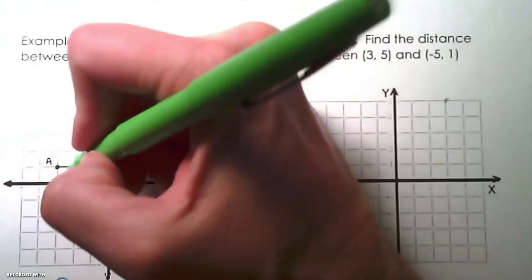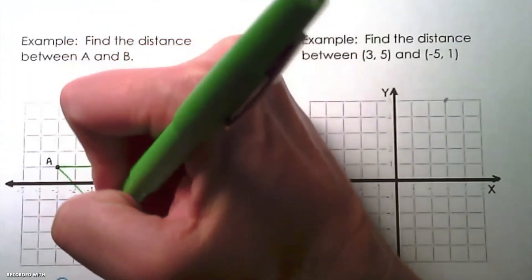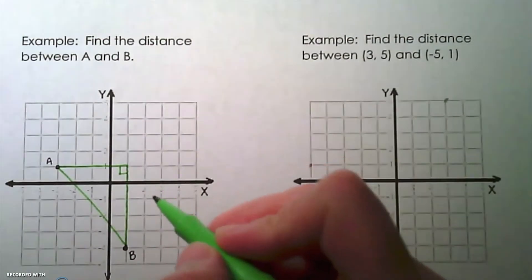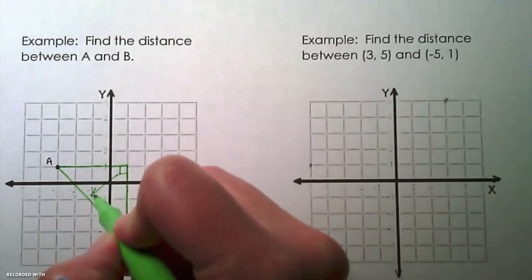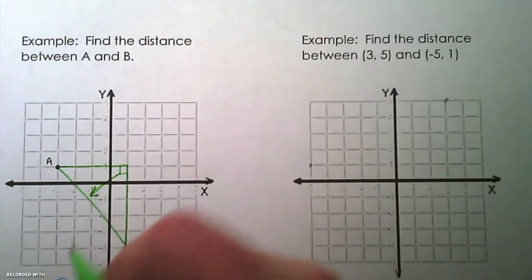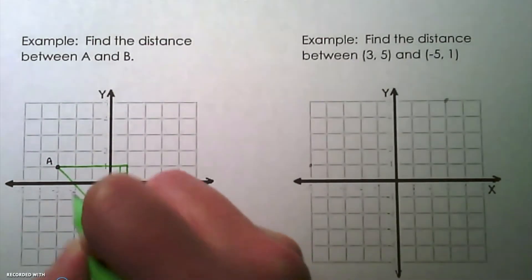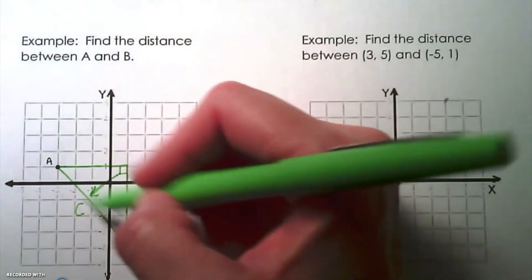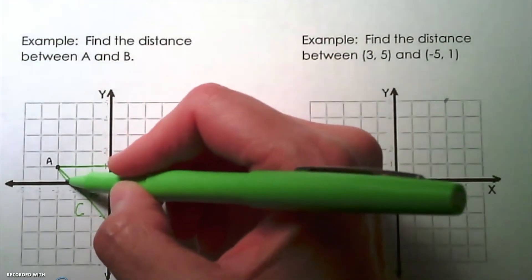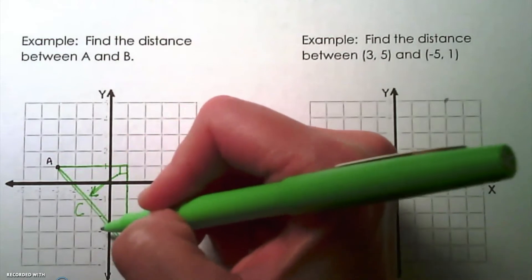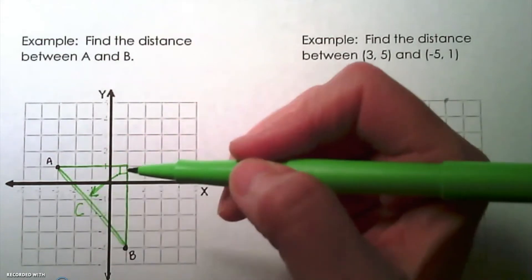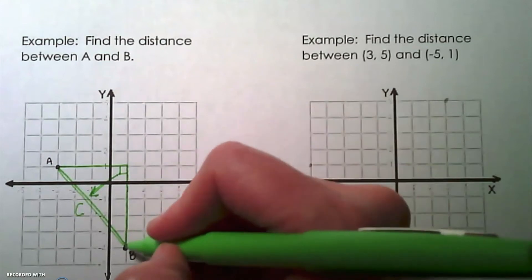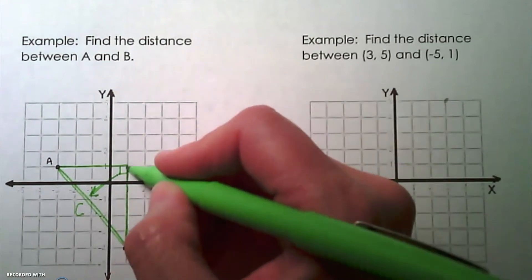I skipped step one — connecting the given points — but we can do it now. Locate the right angle, and the side opposite of that is going to be the hypotenuse, which is the distance we are solving for. The reason we can't simply count this distance is because this line cuts across the grid squares at irregular intervals, so we can't accurately count those distances.